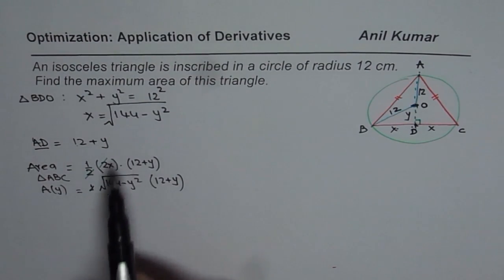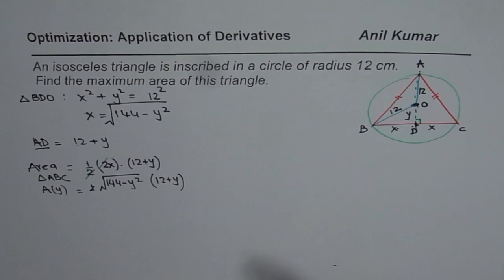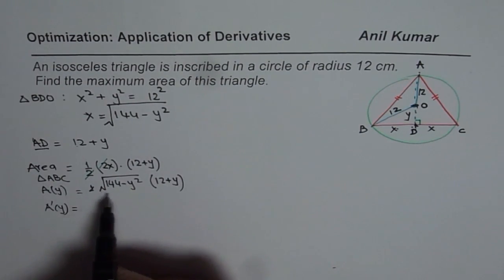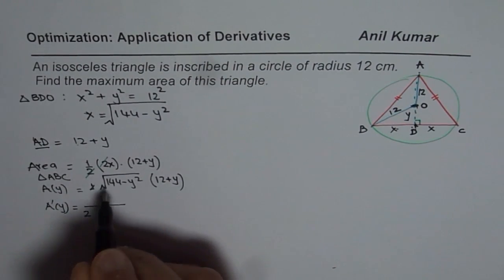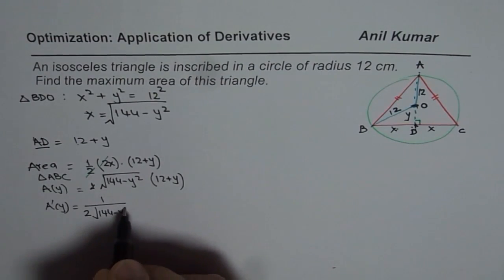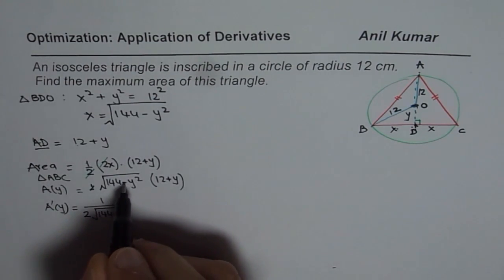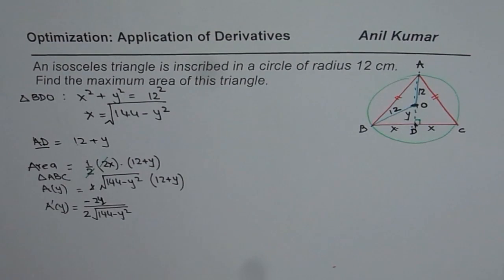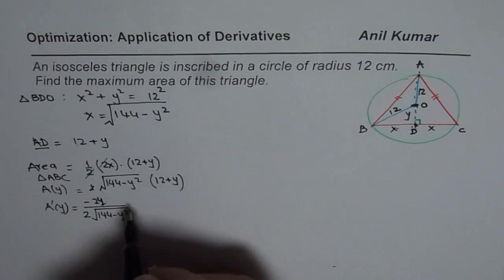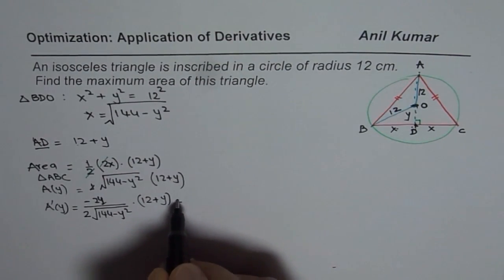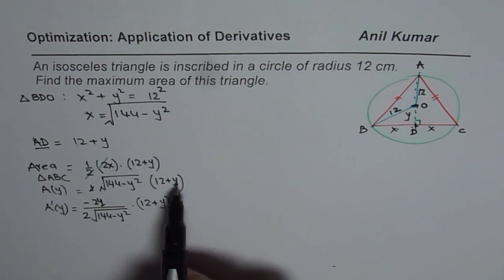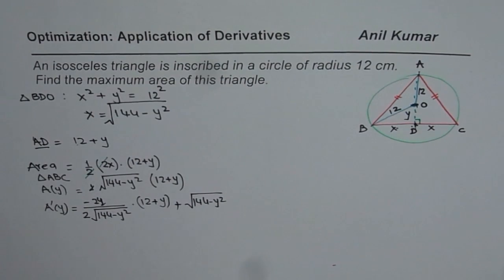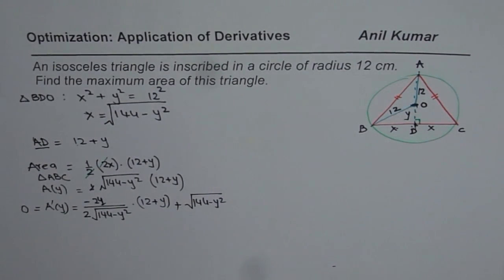To maximize, we find the derivative and find the critical number. Applying the product rule, the derivative of the square root part is 1 over 2 times square root of (144 minus Y²) times (−2Y), times (12 + Y), plus the square root of (144 minus Y²) times 1. We equate this derivative to zero to find the critical number.